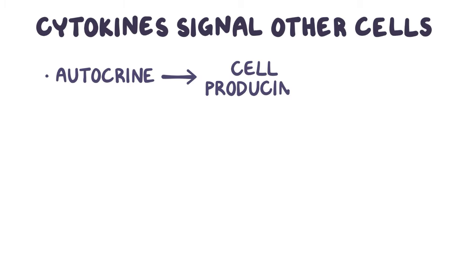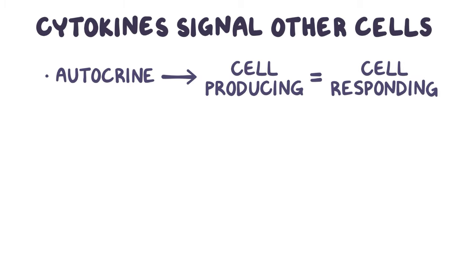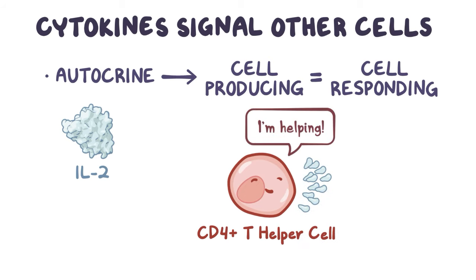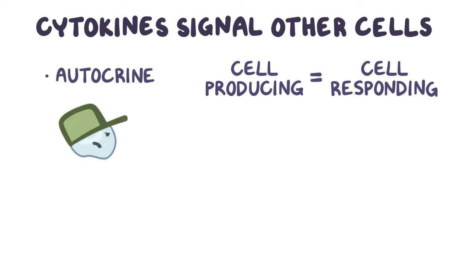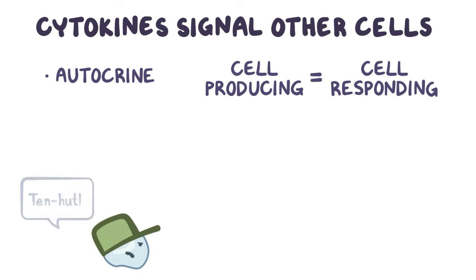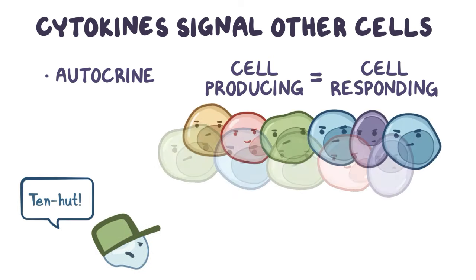Autocrine means the cell producing the cytokine is also the cell responding to the cytokine. An example is interleukin-2, or IL-2, which is secreted by CD4-positive T helper cells. Interleukin-2 promotes the proliferation of T lymphocytes, including the CD4-positive T helper cell that produced it.